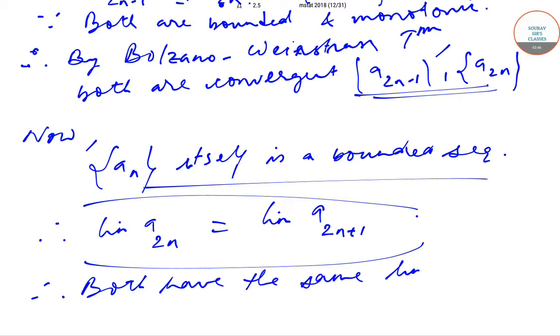Both have the same limit. So as you can see, option B, which states that both the sequences are convergent and have the same limit, that is the correct option. So option B is the correct option.